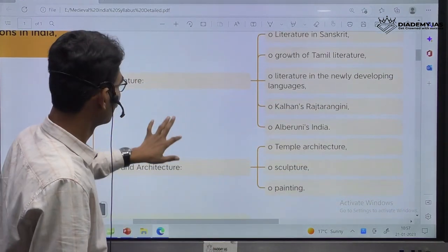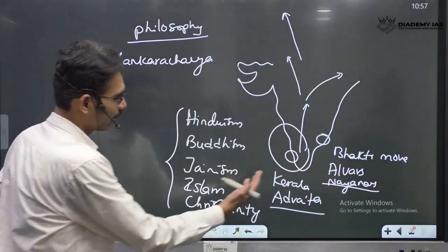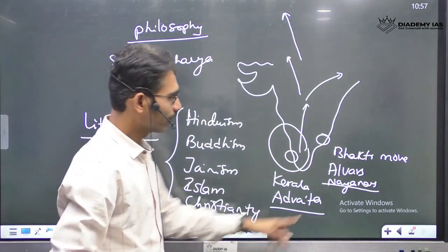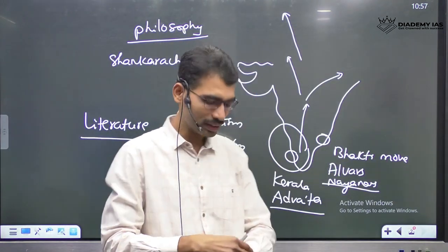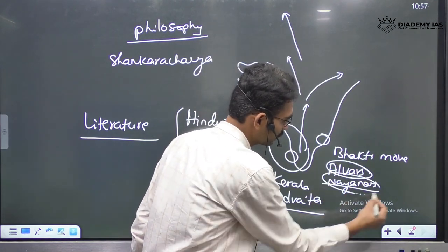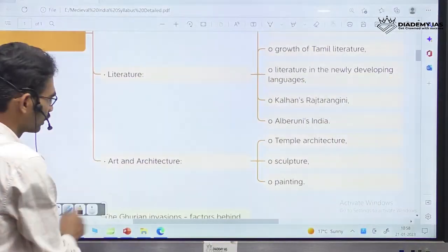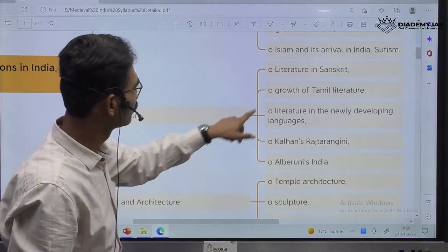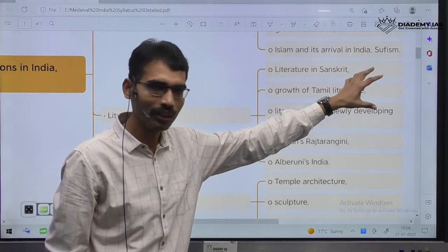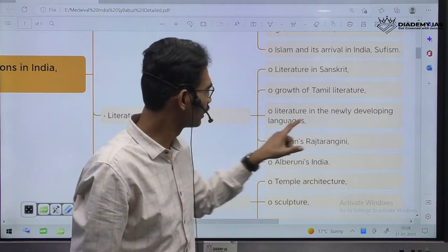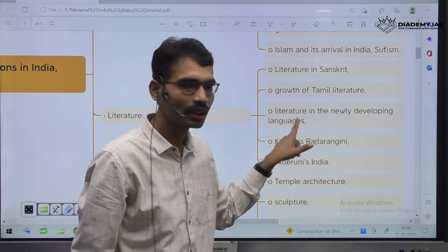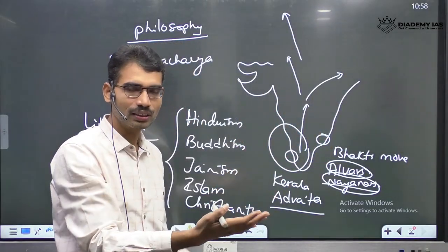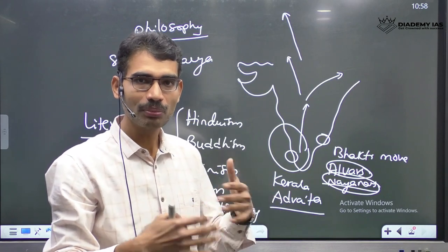These traditions helped in literature development also. For example, Bhakti saints — Alvars and Nayanars — created their own tradition of literature. We have to see literature in Sanskrit, growth of Tamil literature, and literature in newly developing languages. It was the age of regionalism — feudalism was there, and independent local languages became very powerful.